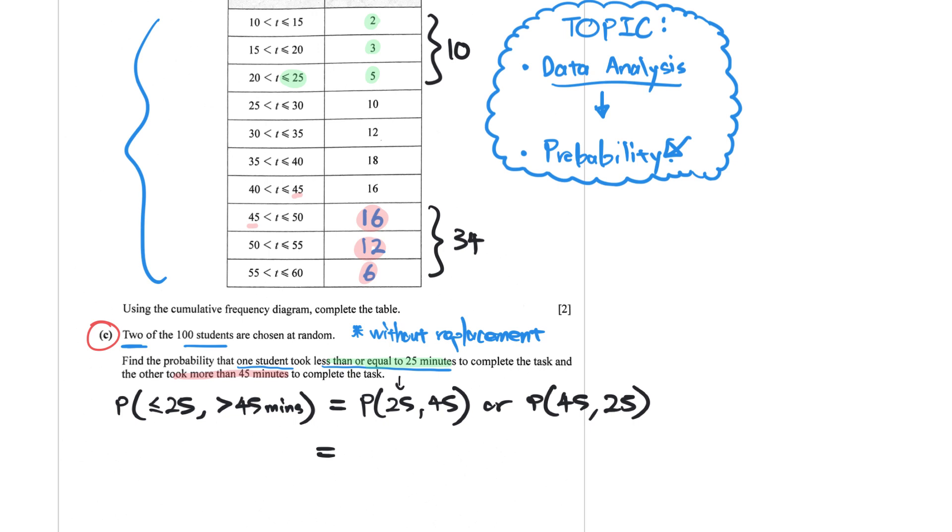Now in this particular instance, 25 minutes or less would be 10 out of the 100. Now for the second student, there are 34 out of the remaining 99. Or add, now pick the 45 minutes or more, or more than 45 minutes, 34 out of the original 100. And then a student who takes 25 minutes or less, which is 10 out of the remaining 99.